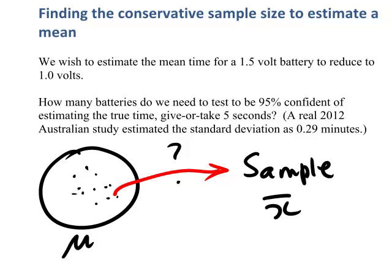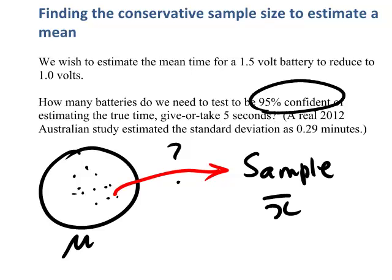In our example, we want to be able to estimate the population mean to within 5 seconds. That is, the true value of the population mean will be somewhere within the interval — the sample mean give or take 5 seconds. And we've noted we want to be 95% confident.